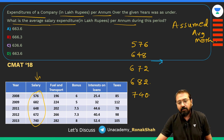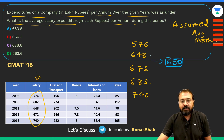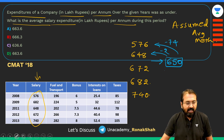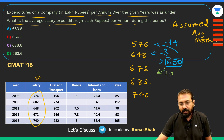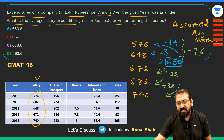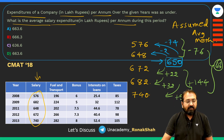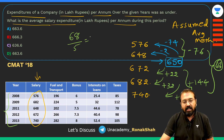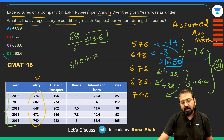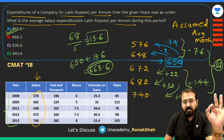Deviations from the assumed average of 650: 576 is −74, 648 is −2, 672 is +22, 682 is +32, 740 is +90. Negative sum = −76, positive sum = +144. Net = +68. Divide by 5 years = +13.6. So actual average = 650 + 13.6 = 663.6 lakhs per annum.